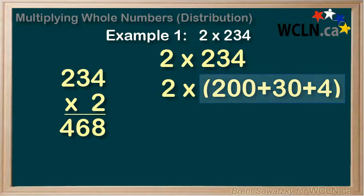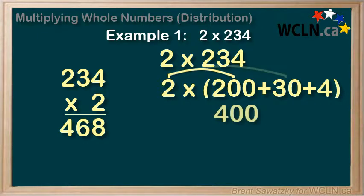So this is 234 broken down into its parts. Now, here's the distribution part. We multiply the 2 by every item in the brackets. So, 2 times 200 is 400, 2 times 30 is 60,